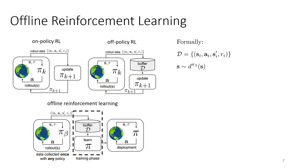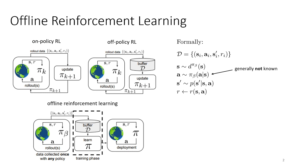We use D with a superscript pi_beta to denote a state distribution, or D superscript pi_theta for the current policy state distribution. Pi_beta represents the behavior policy — the policy that collected the dataset. In general we don't know what this is. It could be humans collecting data, a hand-designed controller, so we just assume that something like it exists, which is not really assuming anything at all.